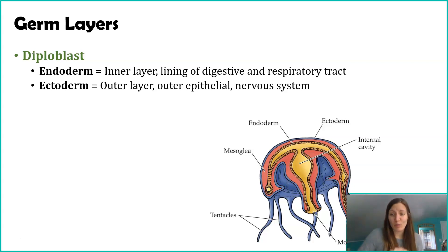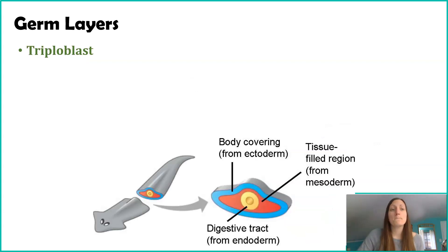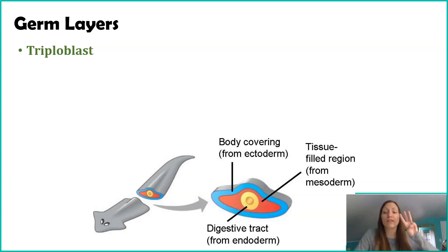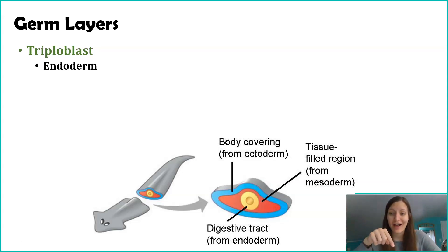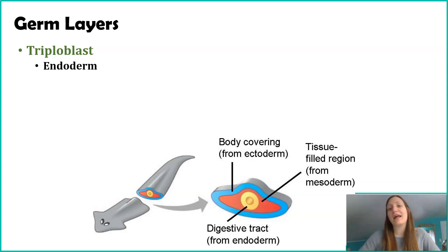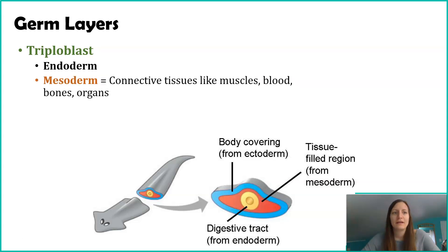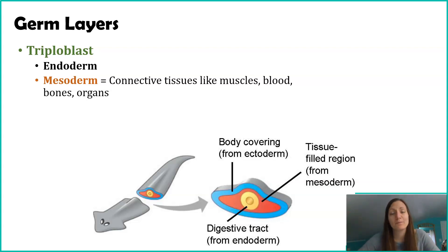Jellyfish are actually one of the very few organisms that are diploblasts. Most other organisms are triploblasts, meaning they have three germ layers. They've got an endoderm, just like we saw in our jellies — this is the inner layer giving rise to the linings of the digestive tract and the respiratory tract. But before we get to the ectoderm, there's a third layer, and that third layer is referred to as the mesoderm. Meso refers to middle.